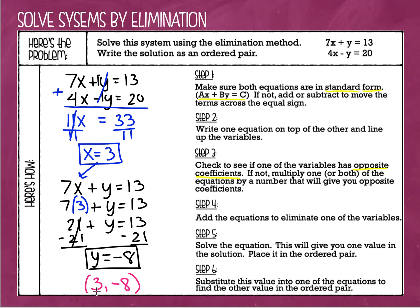That means if we substitute these values into both equations in our system, it's going to work out. 7 times 3 is 21, and 21 plus negative 8 equals 13 — so it works. For the second one, 4 times 3 is 12, and 12 minus negative 8 is the same as 12 plus 8, which equals 20 — it works in that one too. At this point you can do the checks mentally, but if you need to write them down and work it out, you can certainly do that.